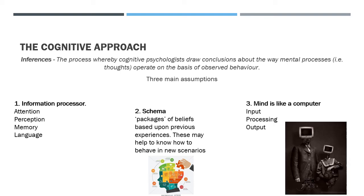The third assumption is that the mind is like a computer. Both have memory, both input and output information — humans input through their senses (a computer via keyboard) and output through speech or behaviour (a computer by opening a programme). We process information from our senses, search memory, decide how to behave, and produce a physical output of behaviour or speech — very similar to a computer's input-process-output cycle, though humans do this differently.